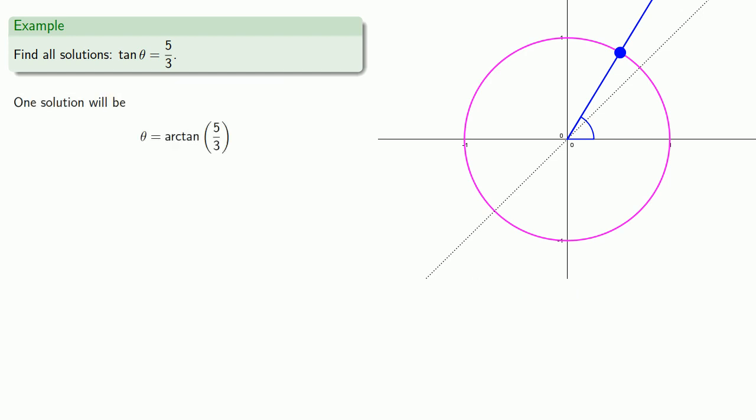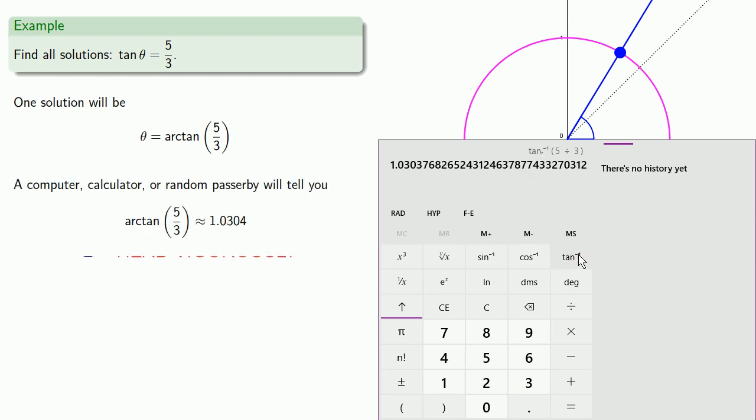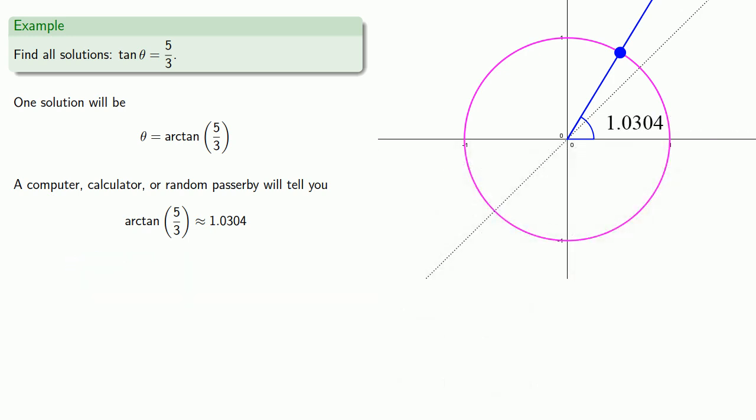So one solution will be theta equals arc tangent of 5 thirds. So a computer, calculator, or random passerby will tell us that arc tangent of 5 thirds is about 1.0304. Wait a minute. Since we drew a picture, we know that whatever this is, this can't be an angle in degrees. One degree is a very tiny angle.